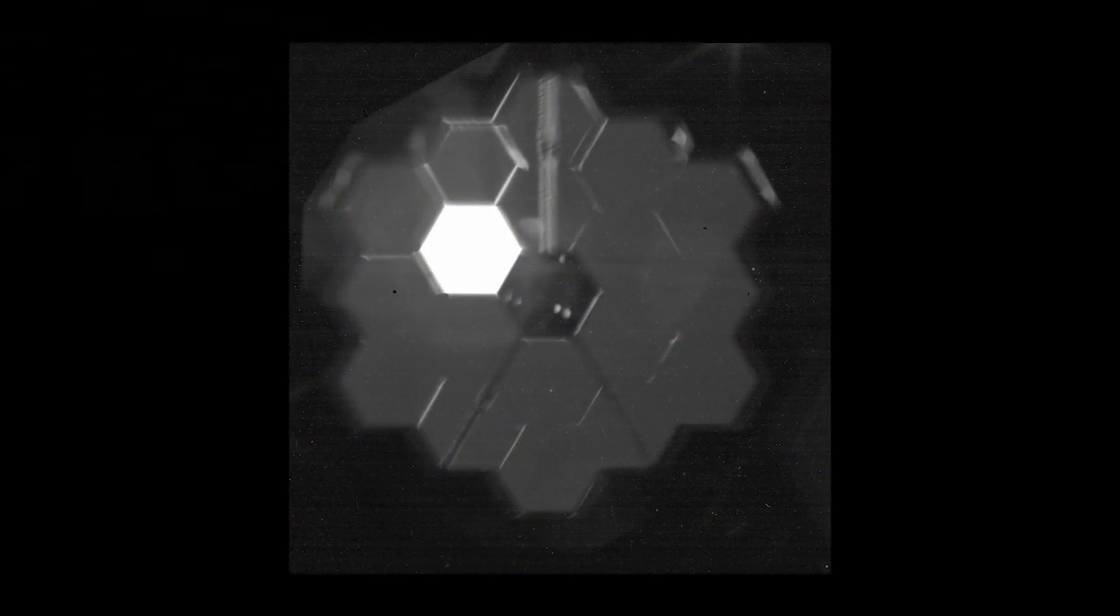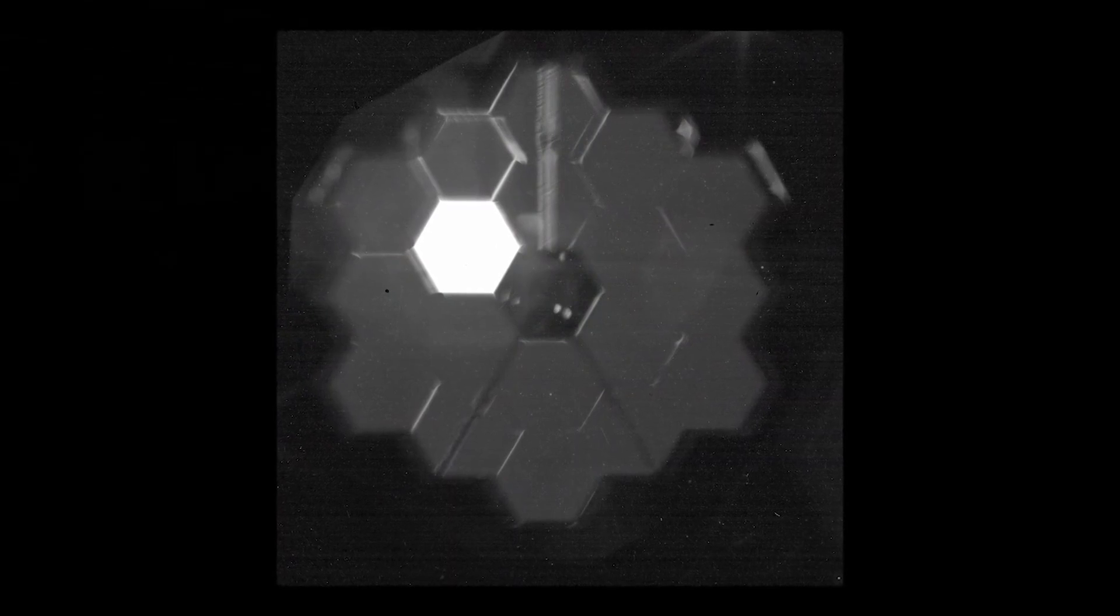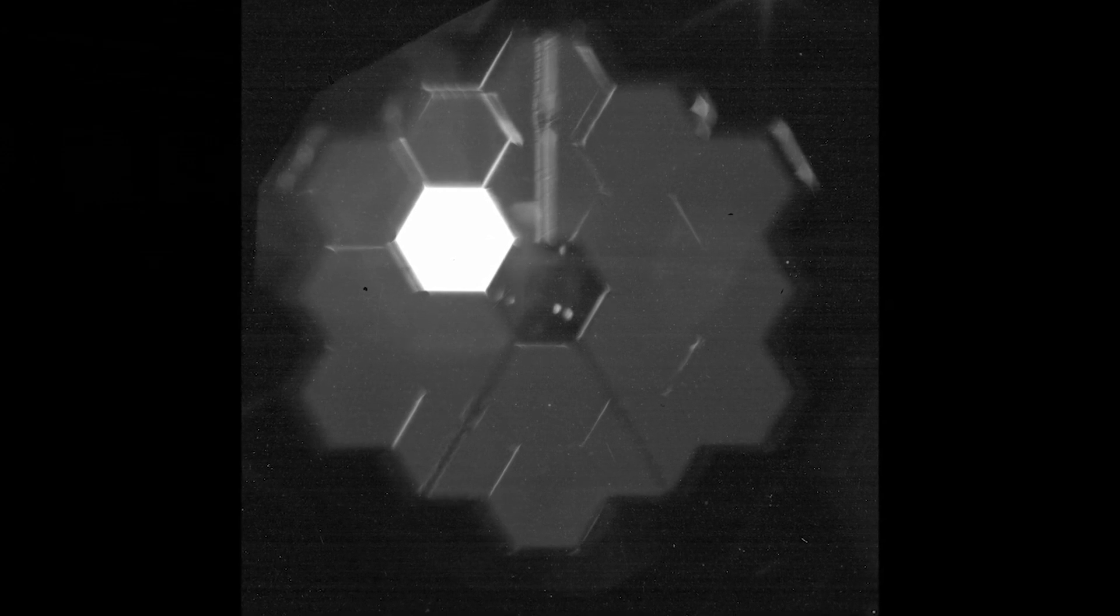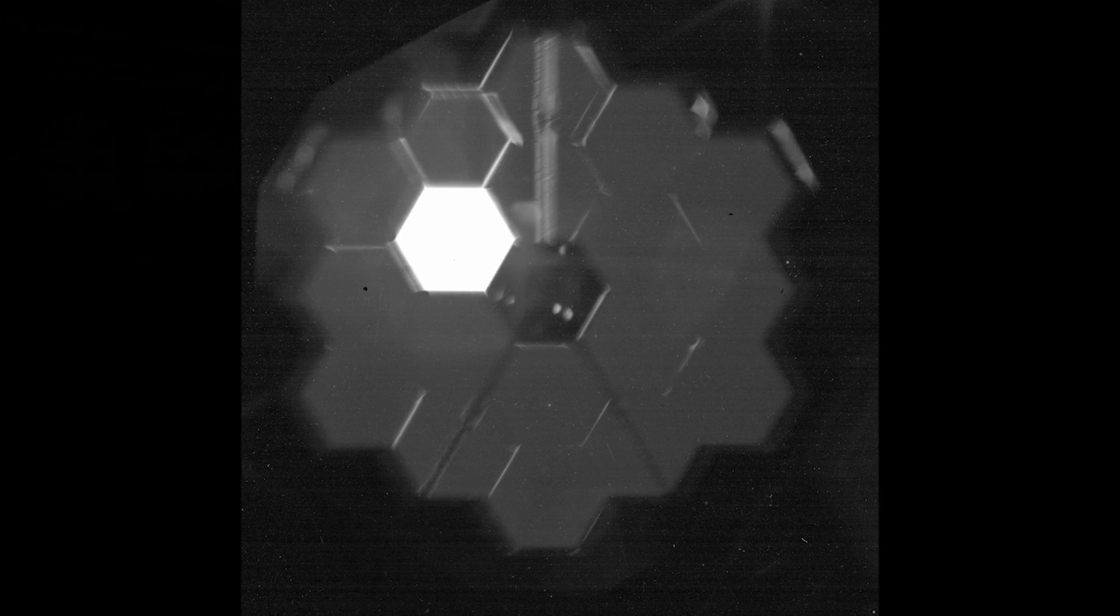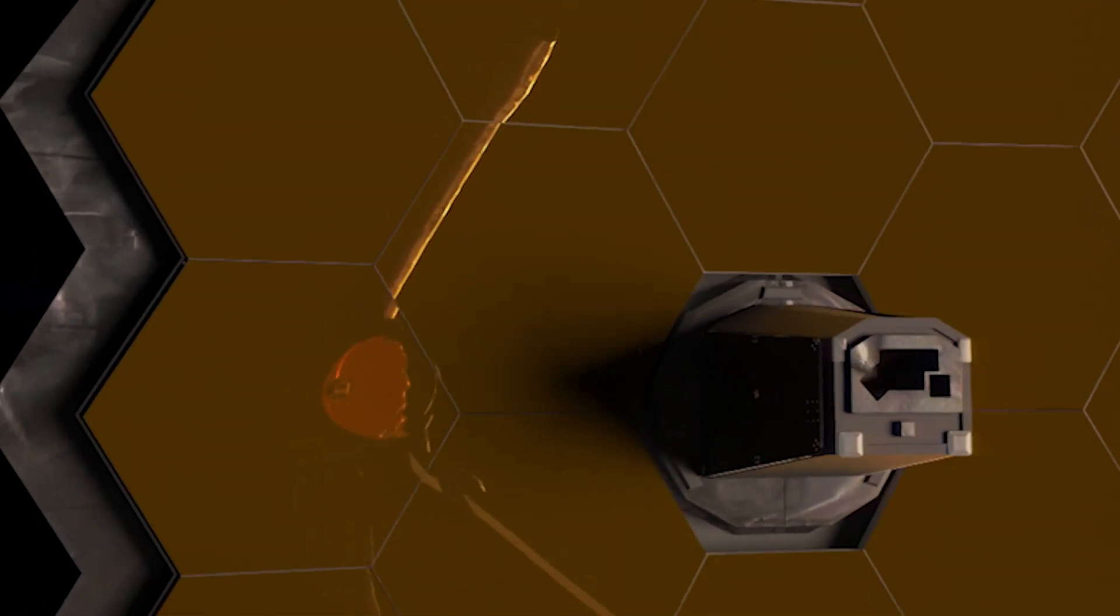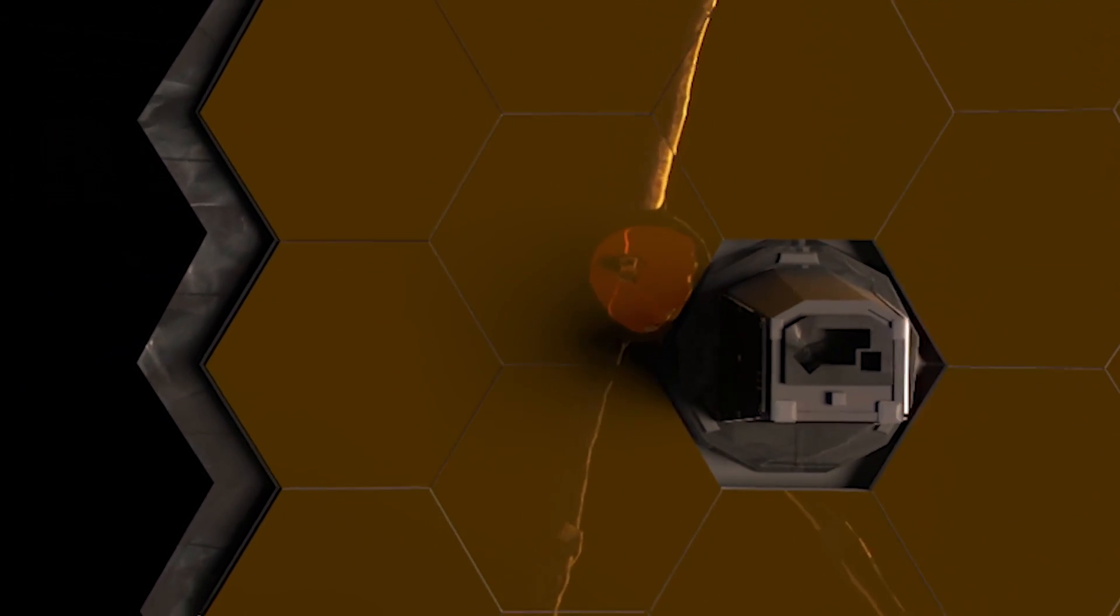In this particular case, one of the segments is pointing at a star, so that is the segment that lights up. But you can see the outline through the shadows of all 18 segments, and you also can see the outline of what's inside of the instrument itself, and we can see how well that primary mirror in the telescope is aligned to the instrument. And that gives us some initial confidence that the alignment looks good, and that's a good starting point for doing the alignment of the telescope.